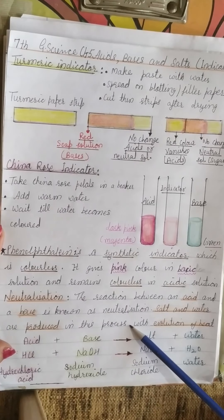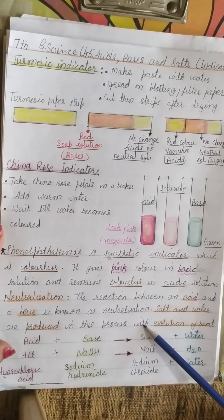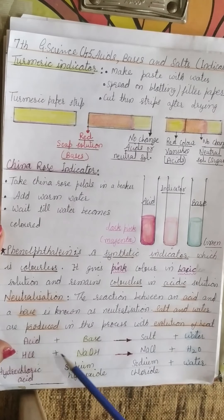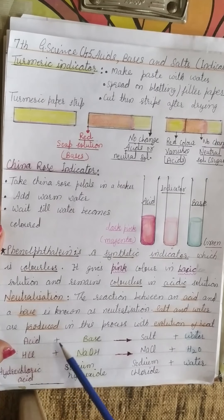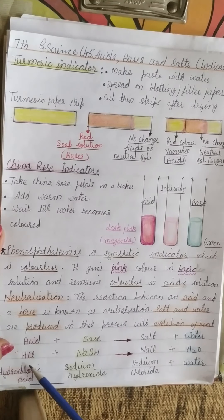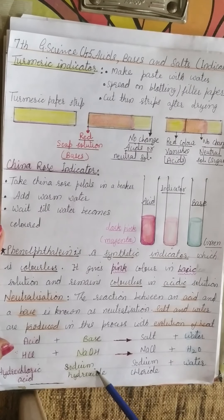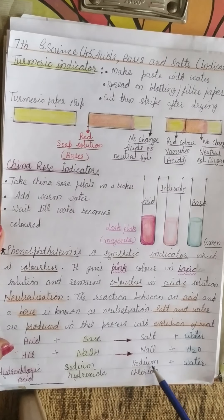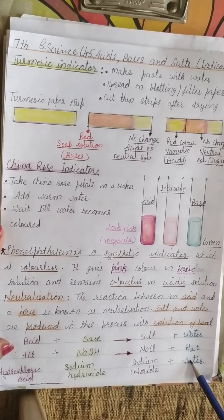The neutralization reaction can be expressed as: acid plus base gives salt and water. For example, hydrochloric acid plus sodium hydroxide, which is a base, gives NaCl — that is sodium chloride — plus H₂O, that is water.